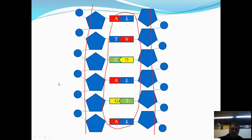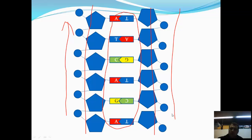You'll probably notice that one strand seems to be the right way up and the other seems to be upside down. The reason for that goes back to the numbering system with the carbons. You'll notice that there's the oxygen there, and we have carbon one, two, three, four, and carbon number five just here.